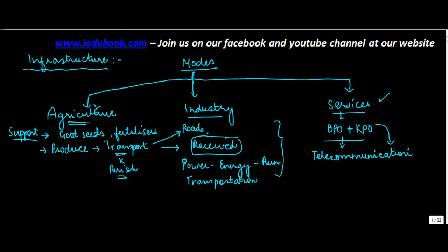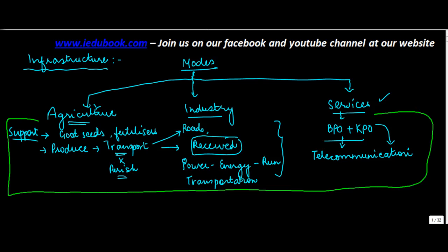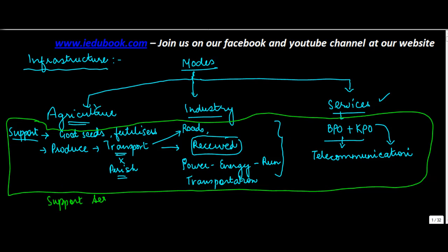So all this gamut of activities, all these services which provide support to each of these sectors, fall within infrastructure. Infrastructure basically refers to the support services which are provided to the agriculture sector, to the industry sector, and to the services sector.